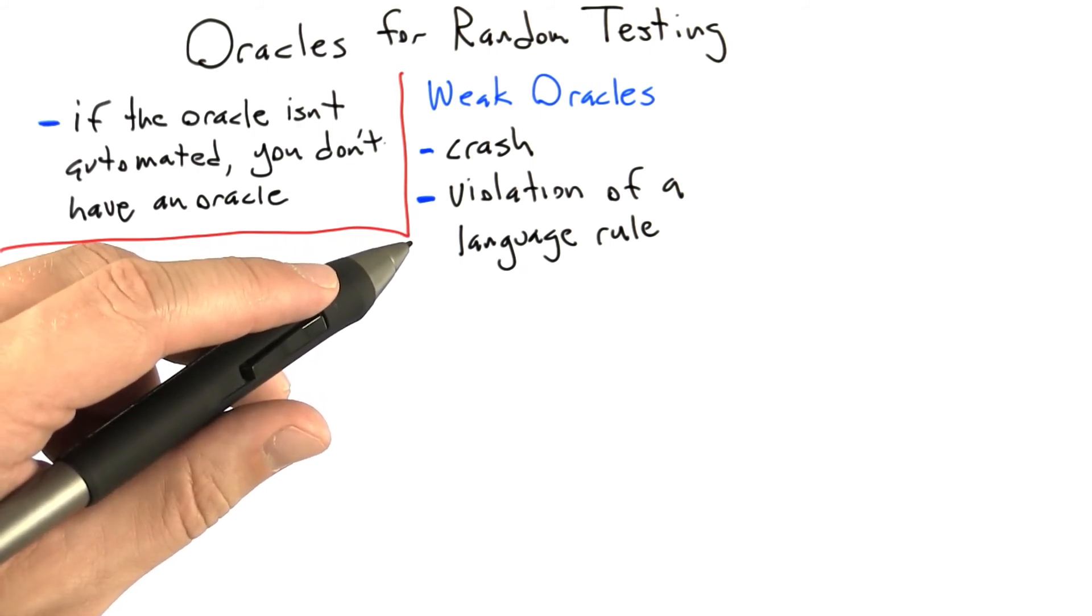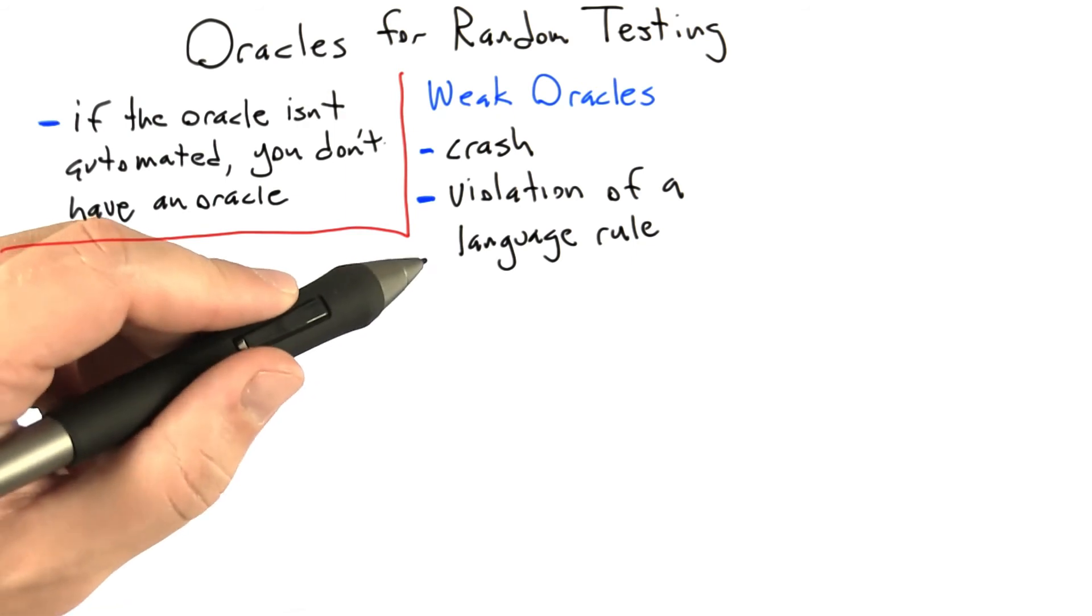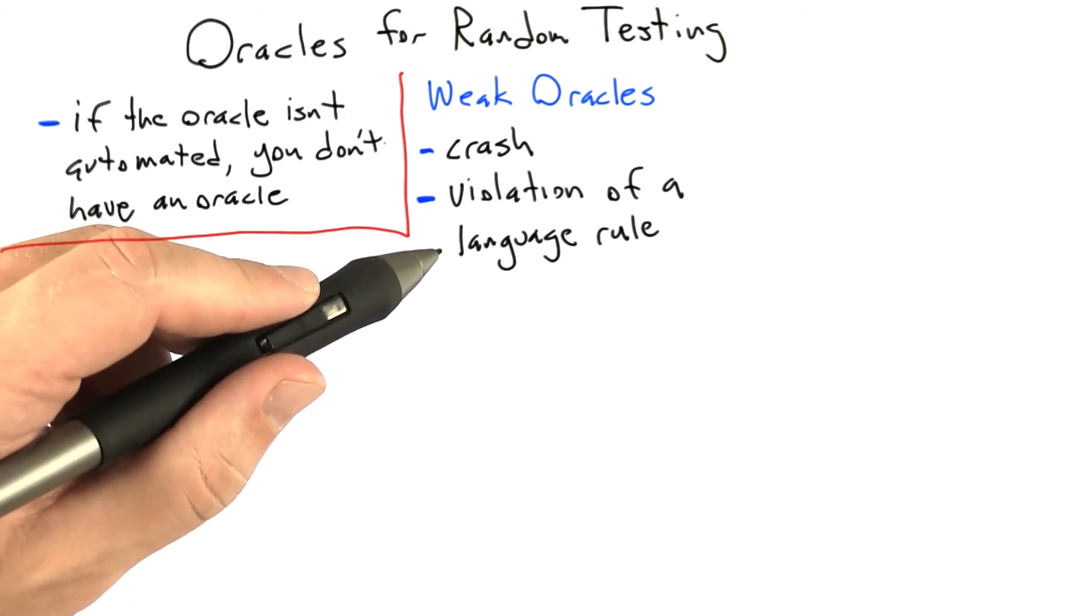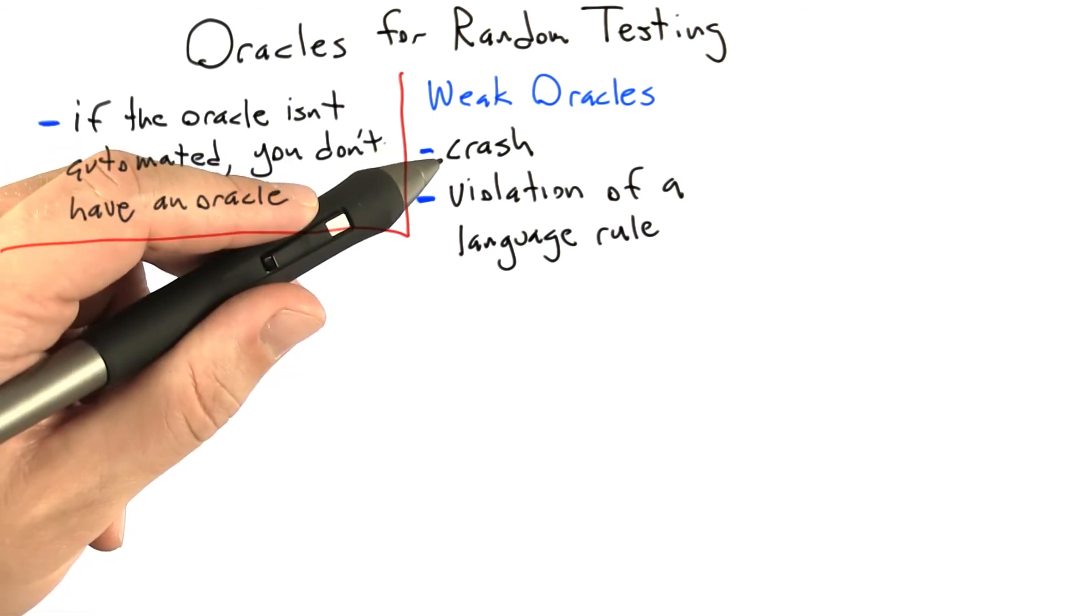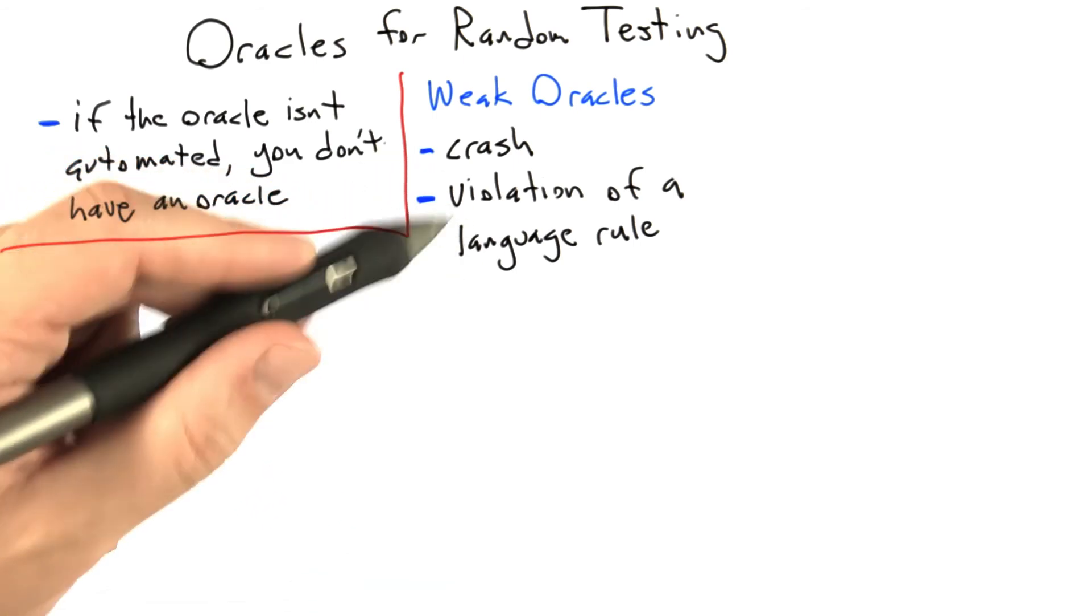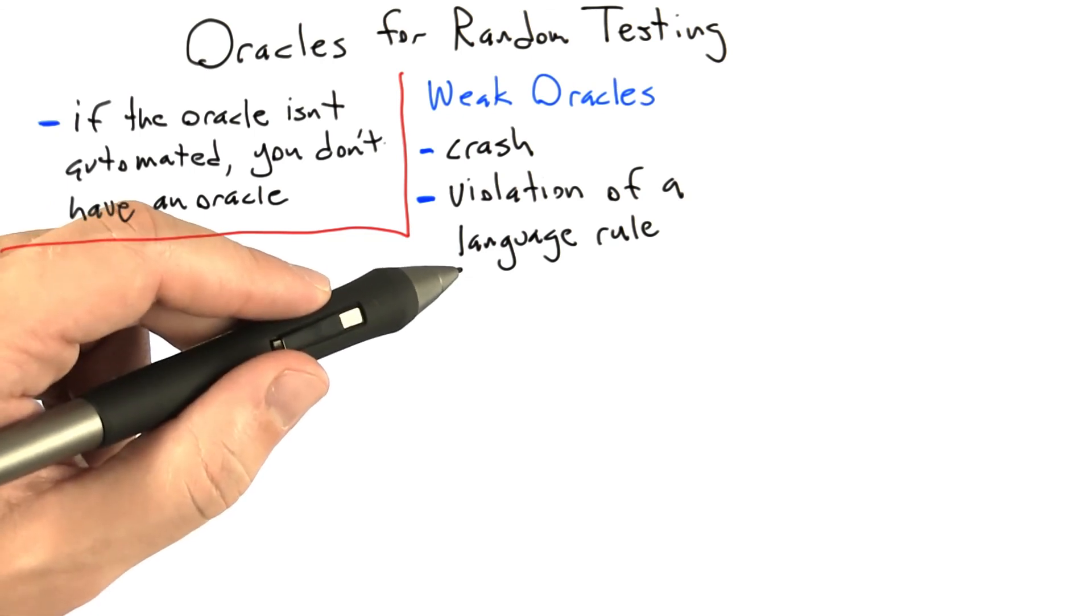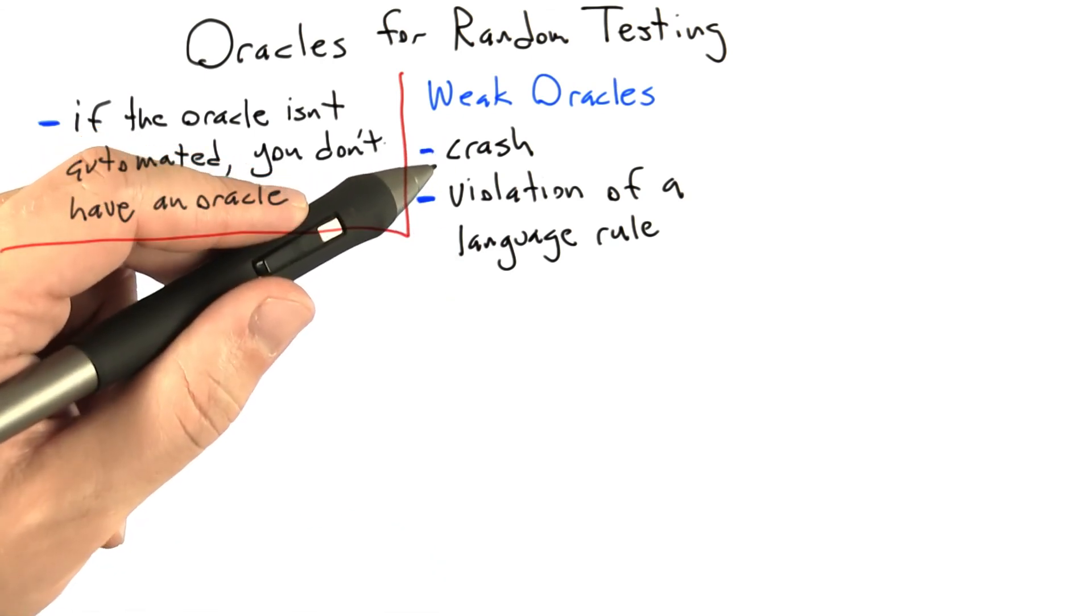And basically, most any programming language has a number of rules like this, and the stronger those rules are, the more effective of an oracle the programming language runtime can serve as. And one of the reasons why C and C++ applications crash so much is because the language is an extremely weak enforcer of runtime rules, and so basically all of the enforcement falls upon the operating system and the hardware itself.